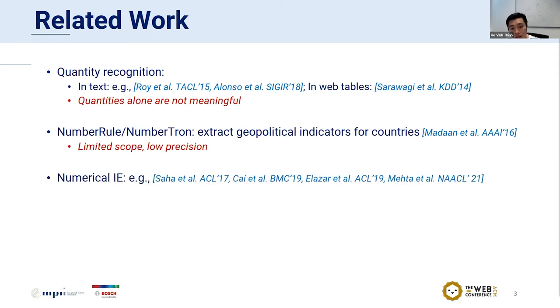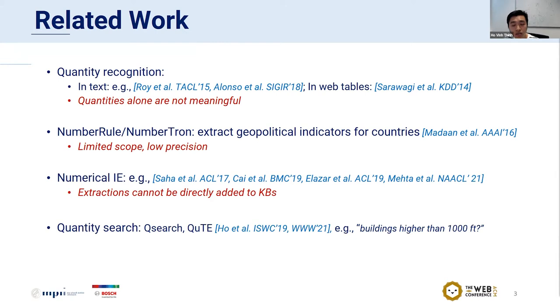Another line of work is about numerical information extraction, which extracts numerical tuples from text. However, these tuples are not mapped to a KB yet, and they still need more post-processing to be added to the KB. The final work I want to mention is the two works on quantity search, Q-Search and QT. These systems are designed for answering quantity queries like buildings higher than 1000 feet. However, these are search-oriented systems. They have good precision for top results, but the recall is quite low.